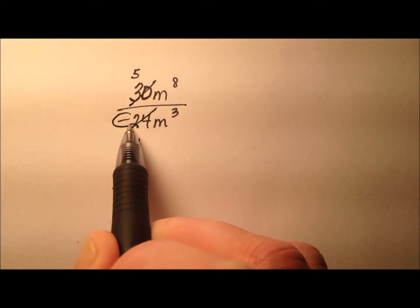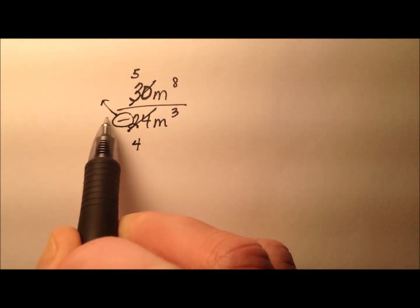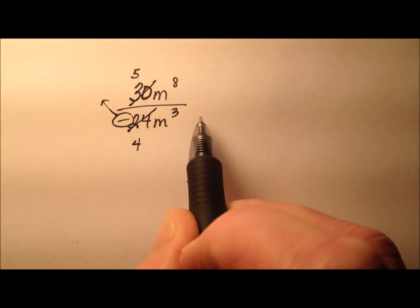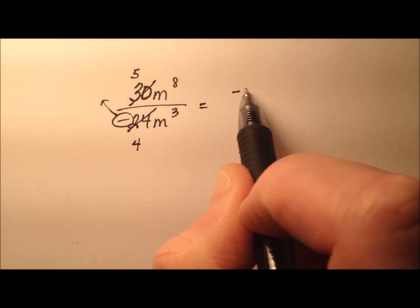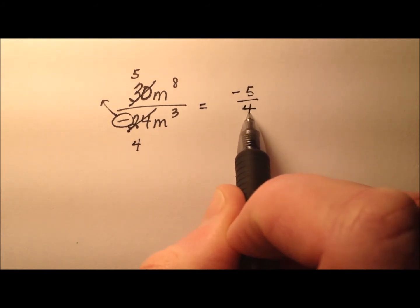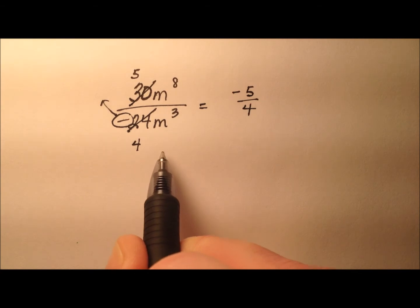This negative sign here, since it's a positive divided by a negative, it either needs to come out front or on top. We just can't leave negatives in the denominator. So if we put it on top, we'll have negative 5 fourths, which is our numeric part or coefficient for our quotient.